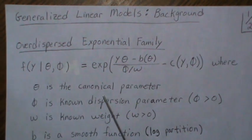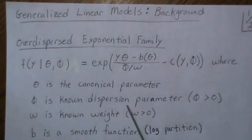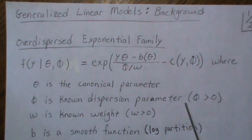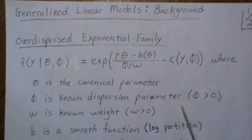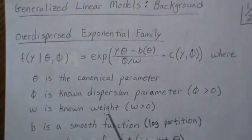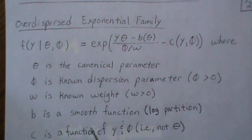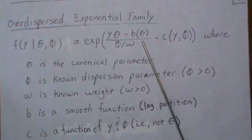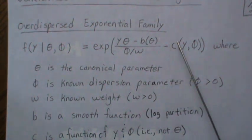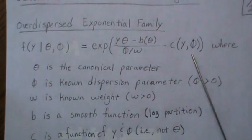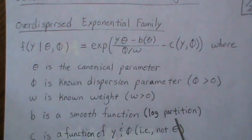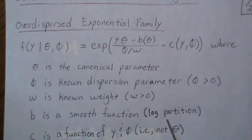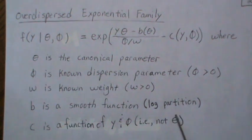So theta is the canonical parameter, phi is a known positive dispersion parameter, the weight w is known and positive, and B is a smooth function. It's called a log partition because B primarily exists to make the density integrate to one — you can look up 'log partition' for more detail on that.